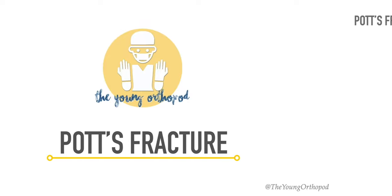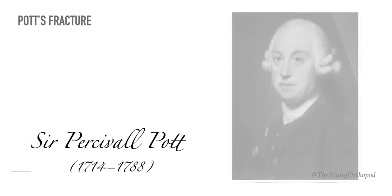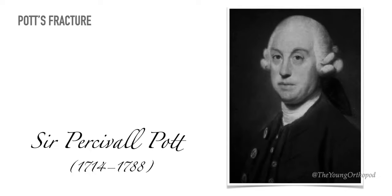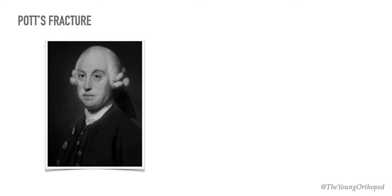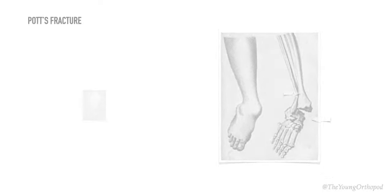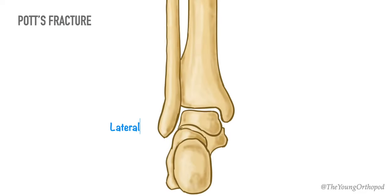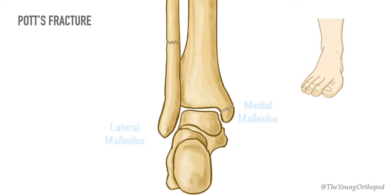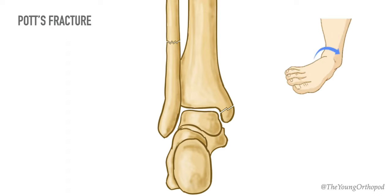Pott's fracture is named after Sir Percival Pott, an English surgeon. Pott originally described a fracture of the distal fibula around 2 to 3 inches proximal to the ankle joint, with an associated tear of the deltoid ligaments and lateral displacement of the talus. In present times, the Pott's fracture has inappropriately evolved into a term to describe a bimalleolar fracture. The mechanism of injury is eversion of the ankle joint.